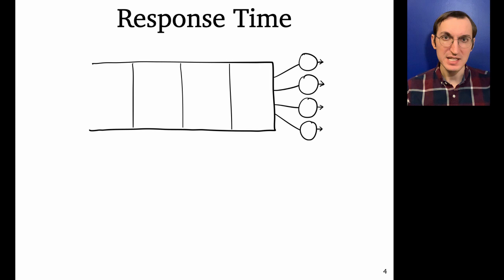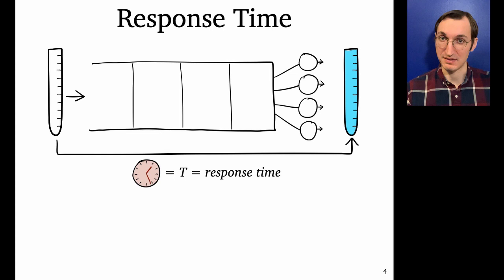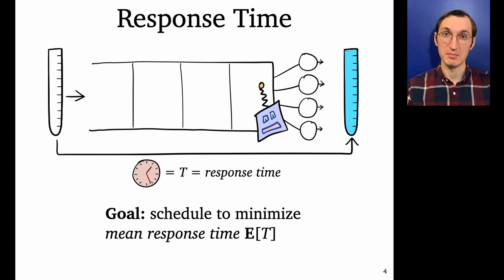So an individual job's response time is the time from when that job first enters the system to when it leaves all complete. And this includes both time it spends at the server as well as time it spends waiting in the queue. And this is going to be greatly influenced by the scheduling policy. So our goal in this talk is to design a scheduling policy to minimize the mean response time, that is the average response time taken over all individual jobs.